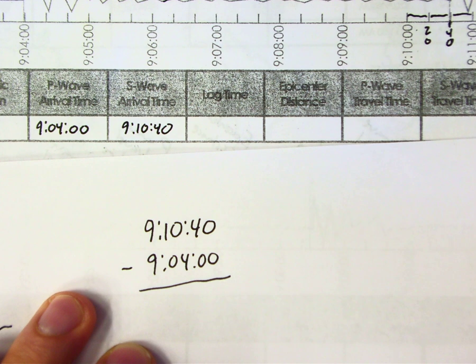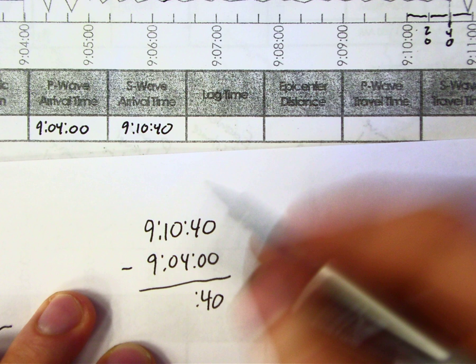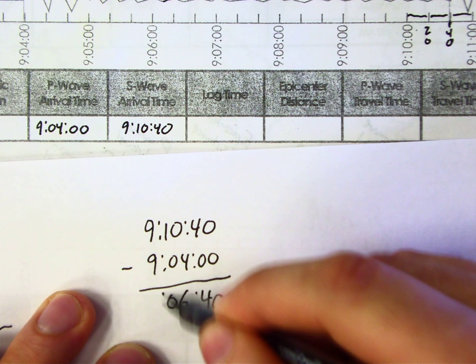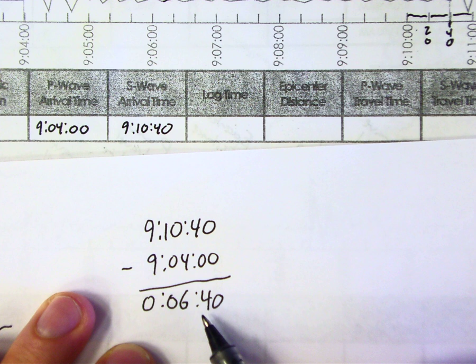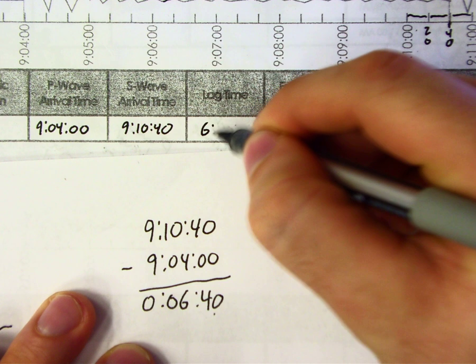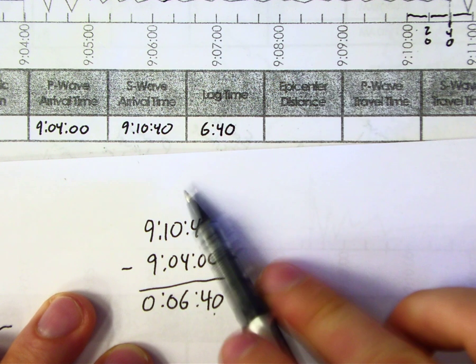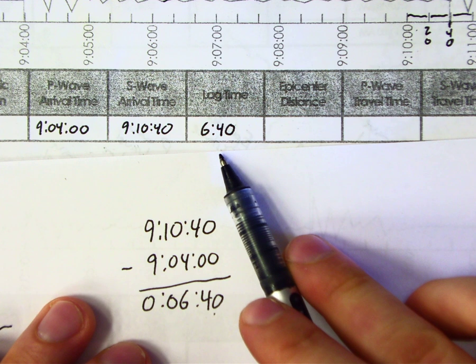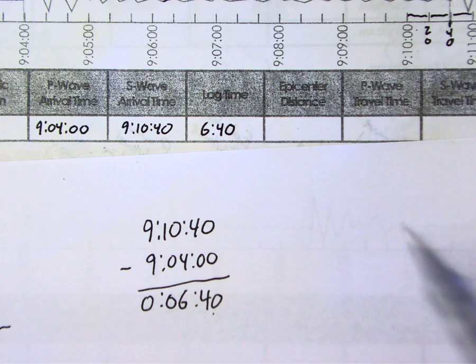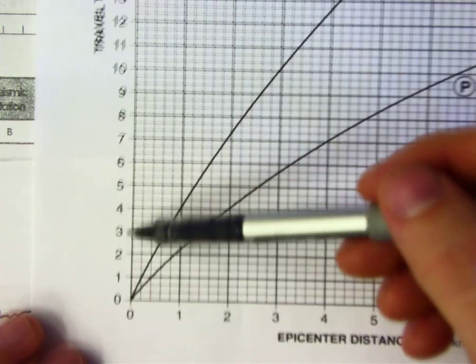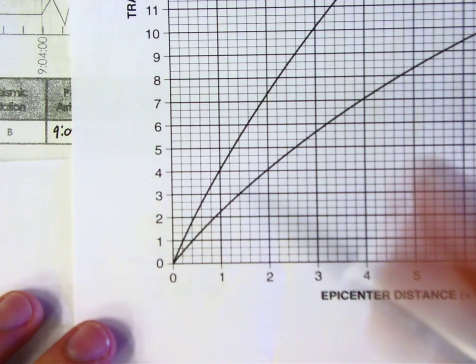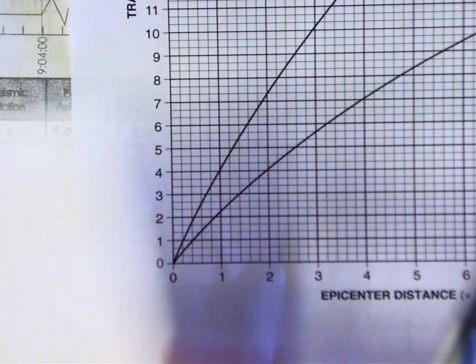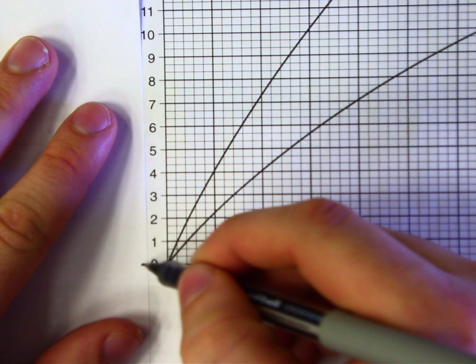We can fill in 6:40 for lag time. With that lag time you can figure out your epicenter distance. Take the SP time travel curve sheet — we know our lag time is 6 minutes and 40 seconds. The side of the chart shows travel time in minutes. Just like with topographic maps, mark where zero is and mark where 6 minutes and 40 seconds falls on the paper strip.